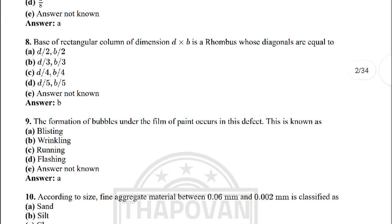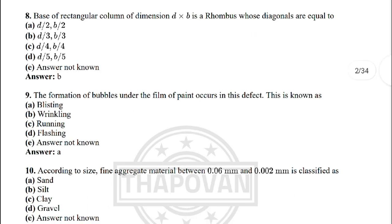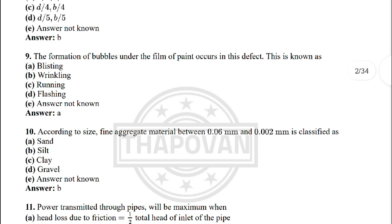Next: the base of a rectangular column of dimension b × d is a rhombus whose diagonals are equal to — the correct answer is option B: d/3, b/3. Next: the formation of bubbles under the film of paint is a defect known as option A: blistering.